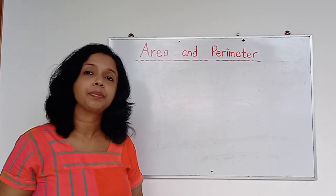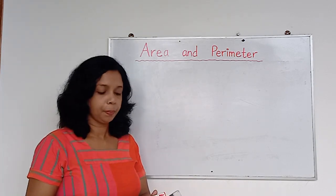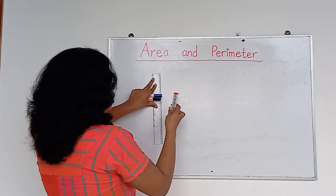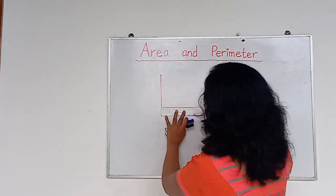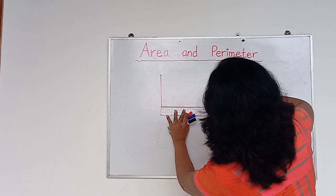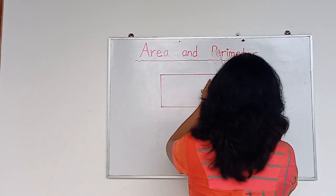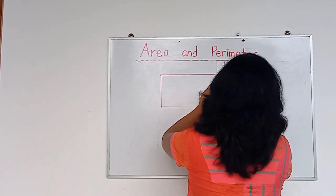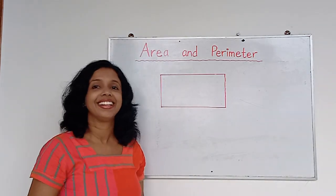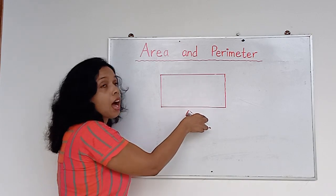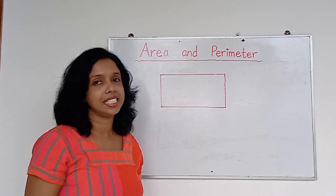Today, I am going to select a rectangle for this. What is a rectangle? A rectangle is a quadrilateral — having four sides. And what are the other features you can see in a rectangle? This is a rectangle. These opposite sides are equal in size — the length.